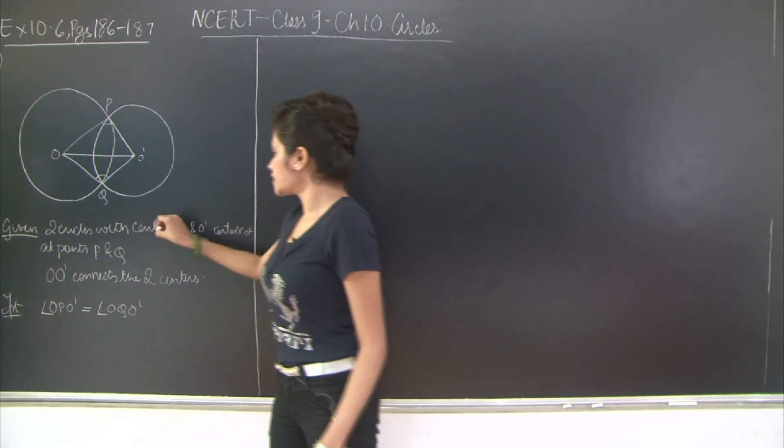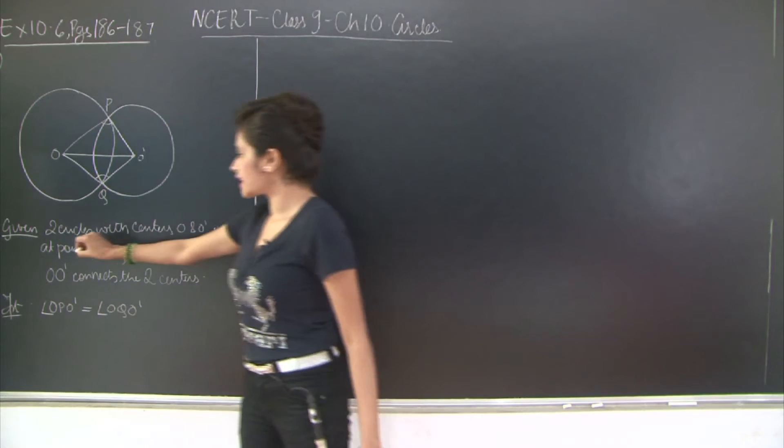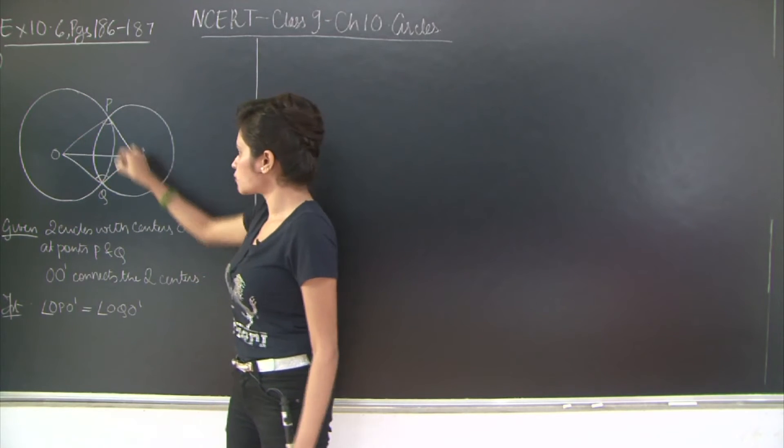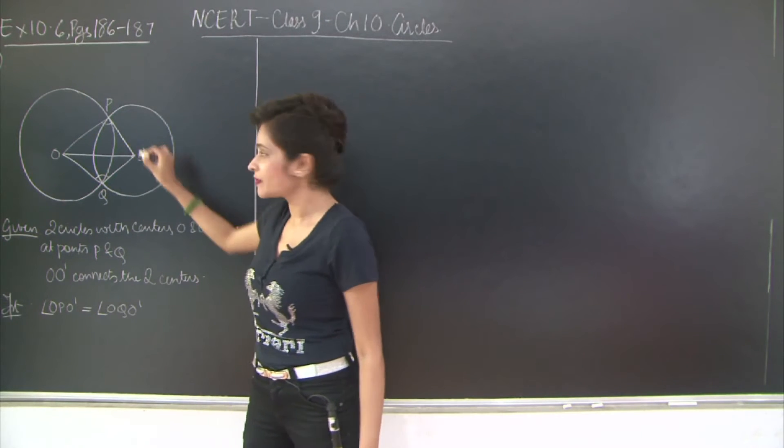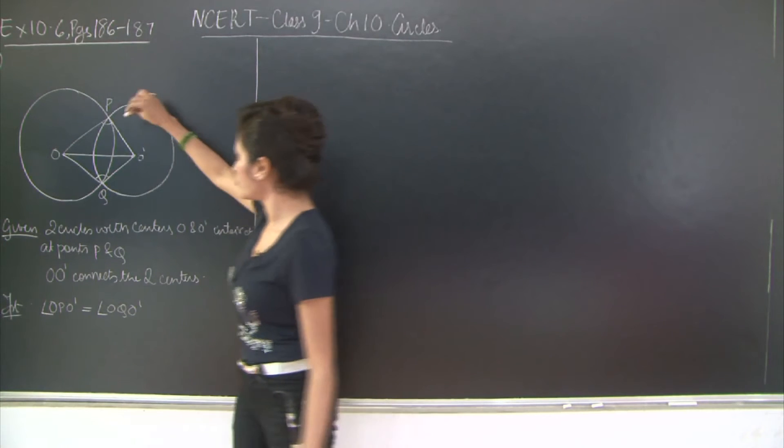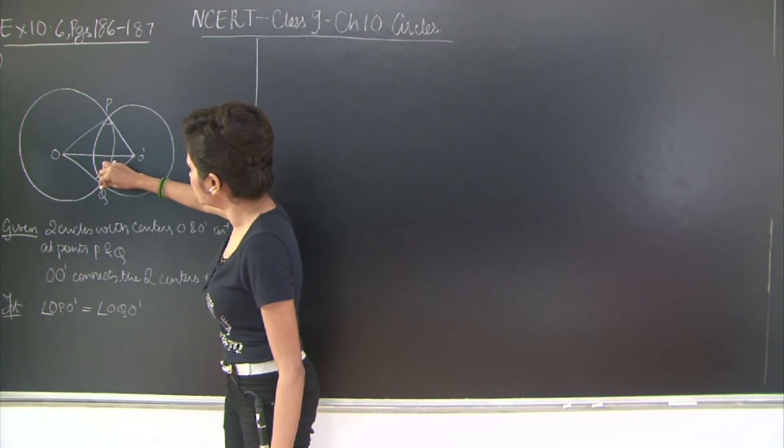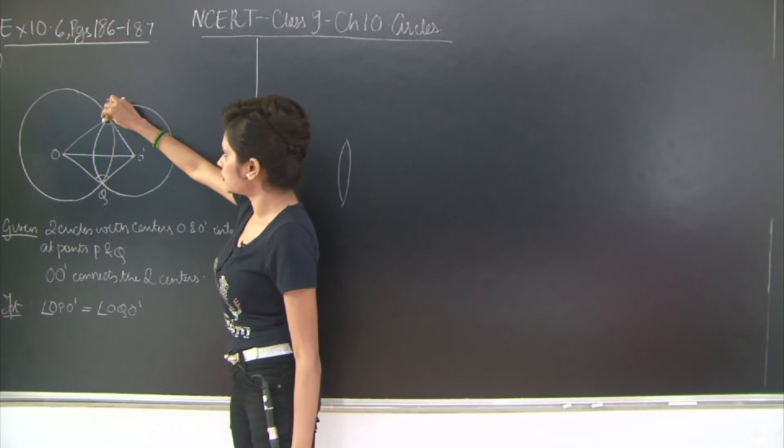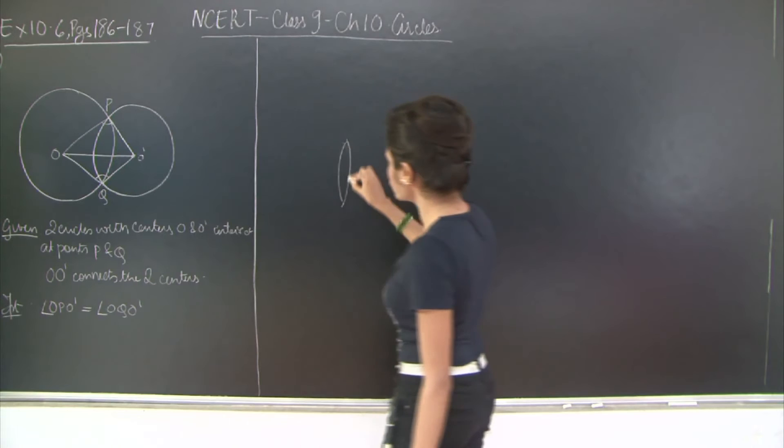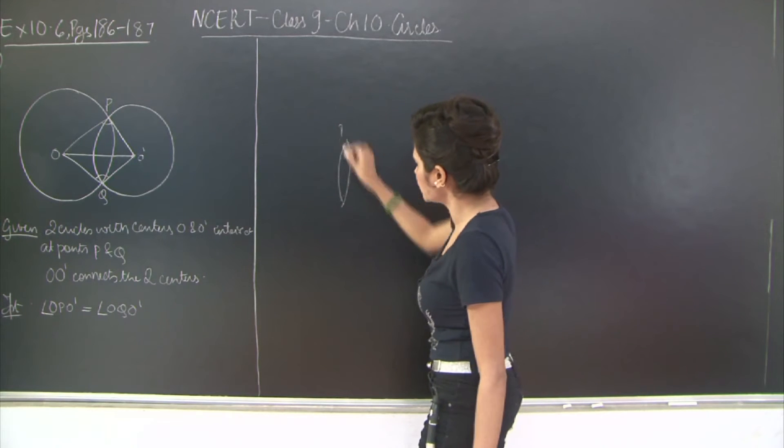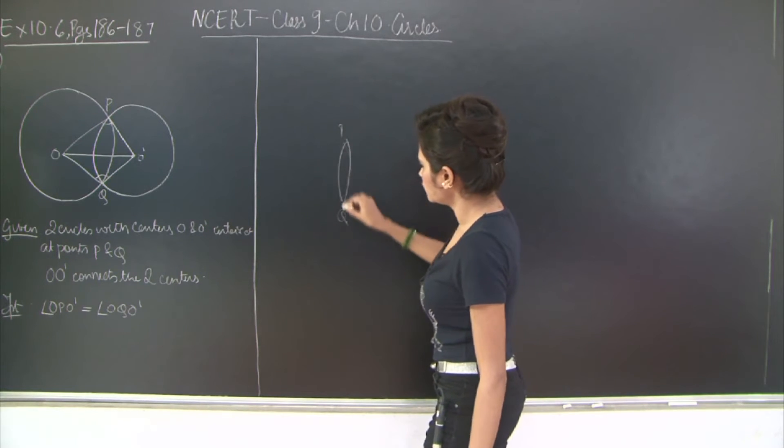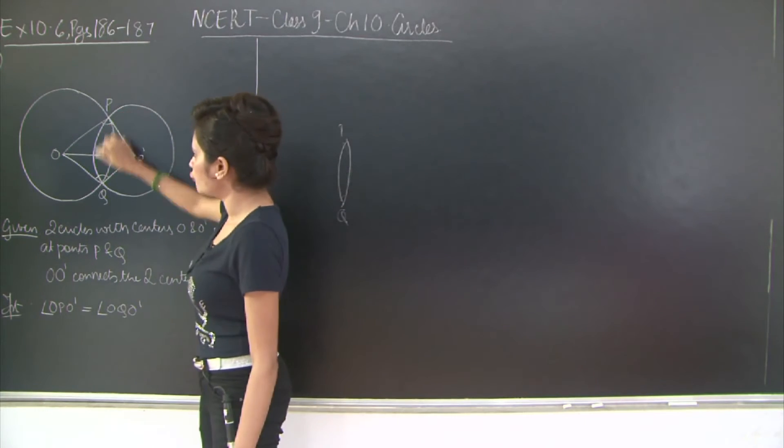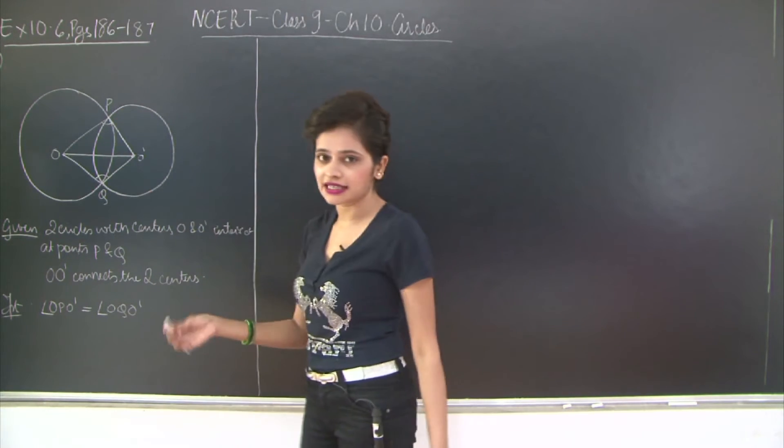Two circles with centres O and O' intersect at points P and Q. So I have this large circle with centre O and this small circle with centre O', these two circles are intersecting at points P and Q and if you notice this region belongs to the larger circle and this portion belongs to the smaller circle. So this is the common region for both the circles after they intersect.